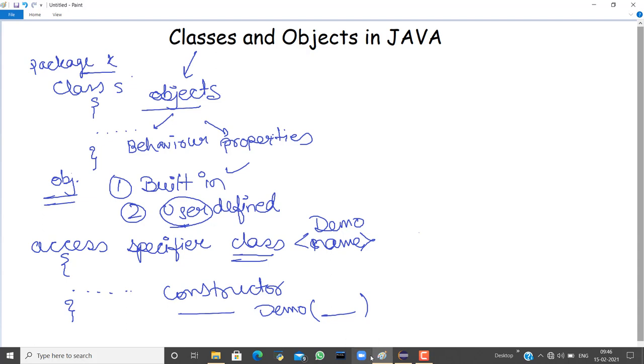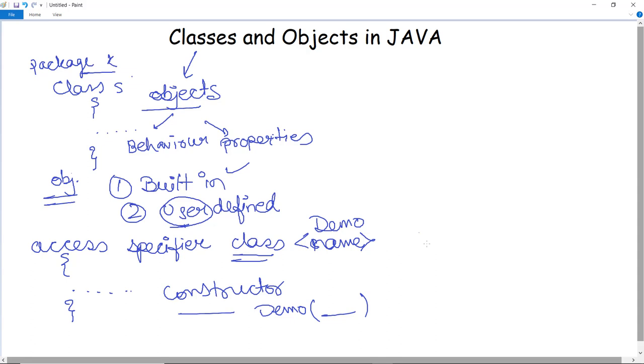Next, we switch to object. We have discussed about class and we have also discussed about the constructor which is having the same name of the class. So next we are going to discuss about the objects in Java.